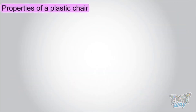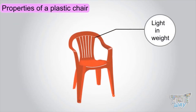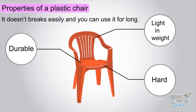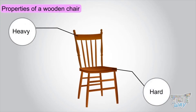Now let's see properties of a plastic chair: light in weight, hard, and durable — it doesn't break easily and you can use it for long. Now let's see properties of a chair made of wood: heavy, hard, and durable.